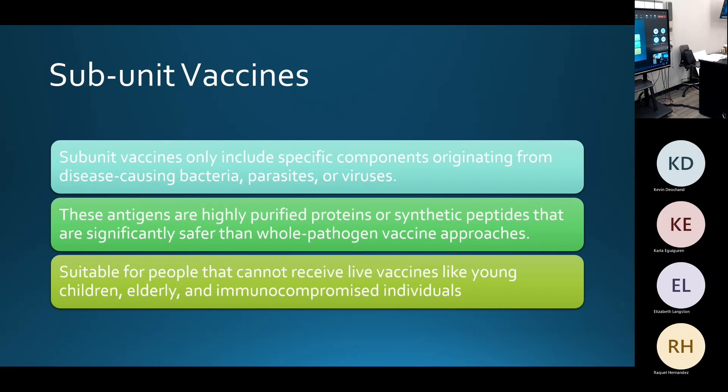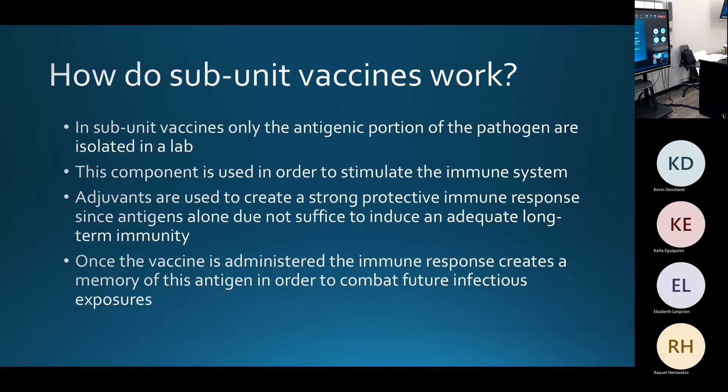This makes subunit vaccines more suitable for children, elderly, and immunocompromised individuals. The way subunit vaccines work is that only the antigenic portion of the pathogen is isolated within the lab, and that component is used in order to stimulate the immune system.